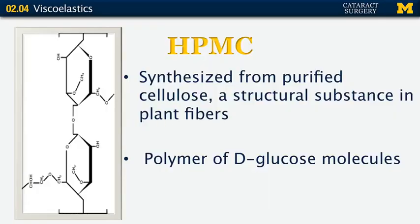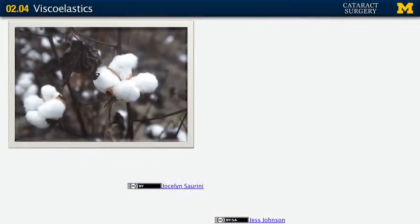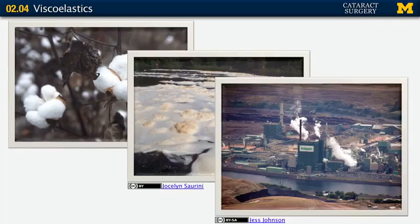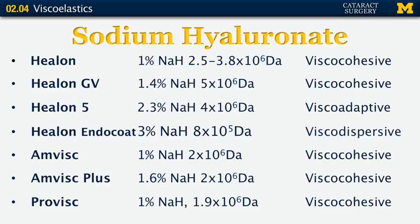On to HPMC. This is synthesized from purified cellulose, which is a structural substance in plant fibers, and is a polymer of D-glucose molecules. These molecules were actually used in OVDs several years ago, and actual vegetable fibers were found in some samples of OVDs used in the early 1980s. These aren't commonly used any longer. The source was cotton wool fibers and wood pulp, but like I said, they're not really used very much in the United States anymore.